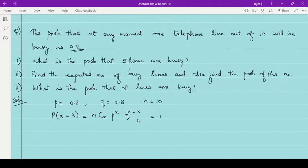which is equal to n is 10, 10Cx P raised to x means 0.2 raised to x and Q raised to x, 0.8 raised to 10 minus x where x is equal to 0 to 10.